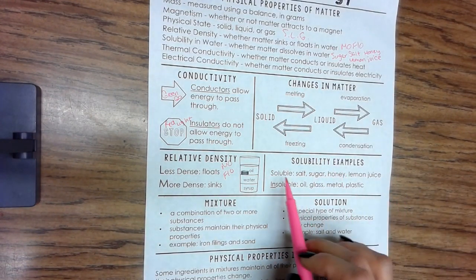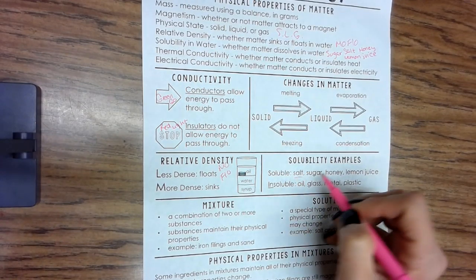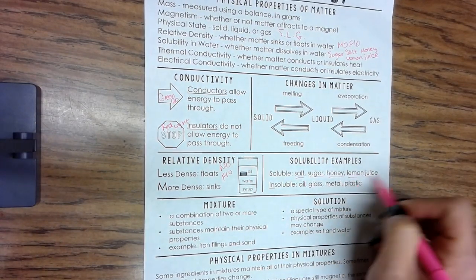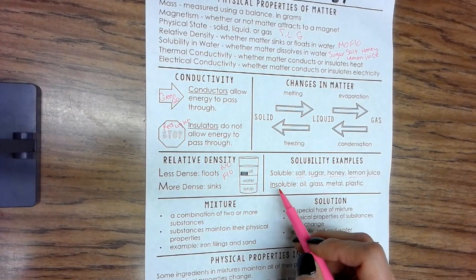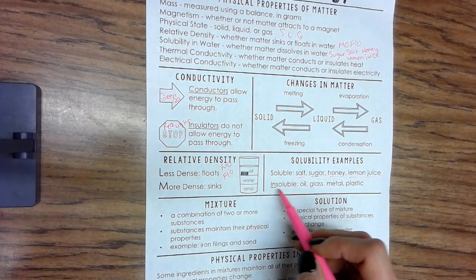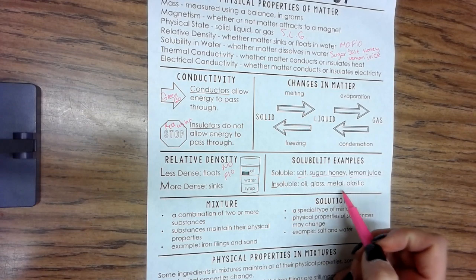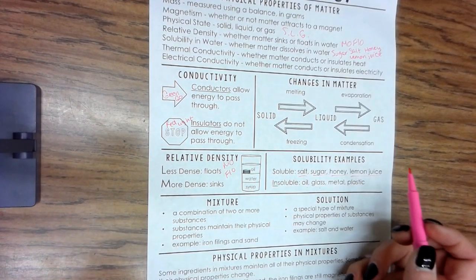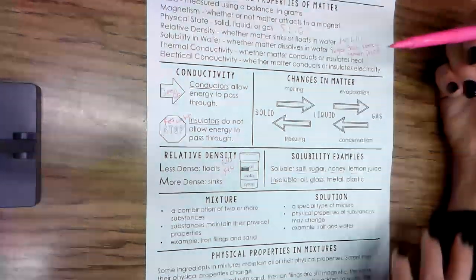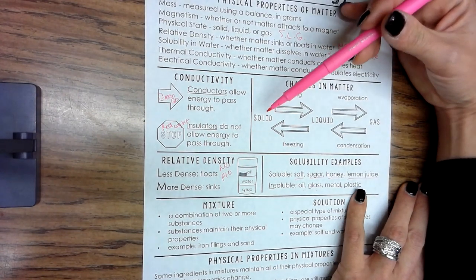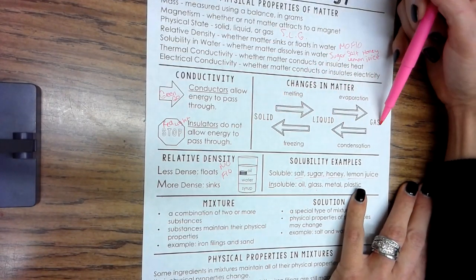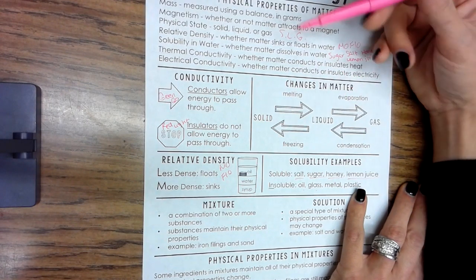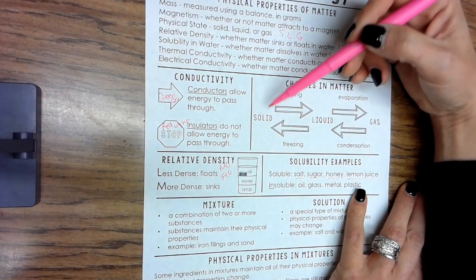Solubility: soluble includes salt, sugar, honey, lemon juice. Insoluble - that's an important word - means it's not soluble, it doesn't dissolve: oil, glass, metal, plastic. Changes in matter: let's talk about changes in matter. Here are your three states of matter: solid, liquid, gas - silly little geeks.